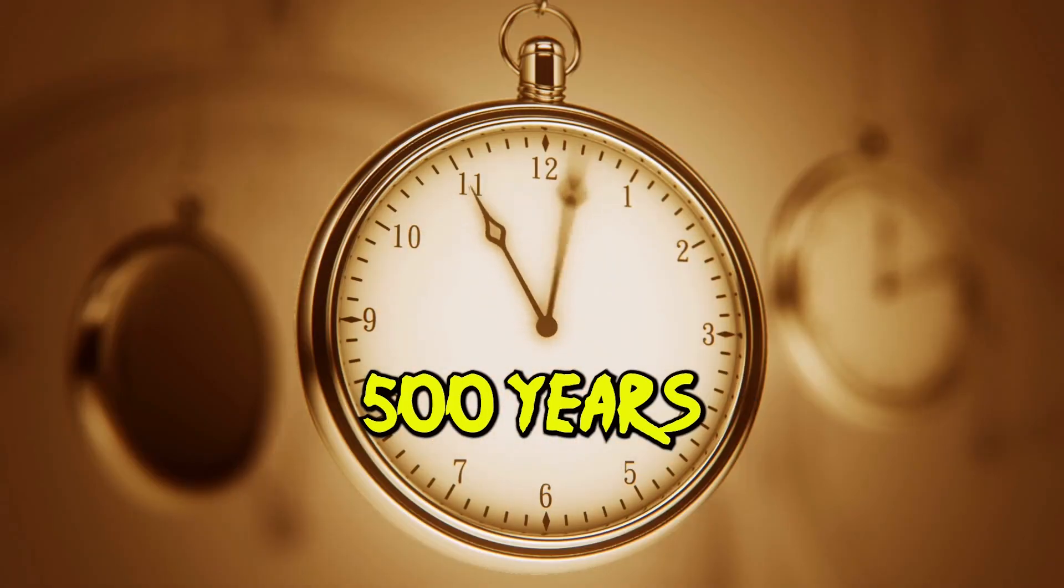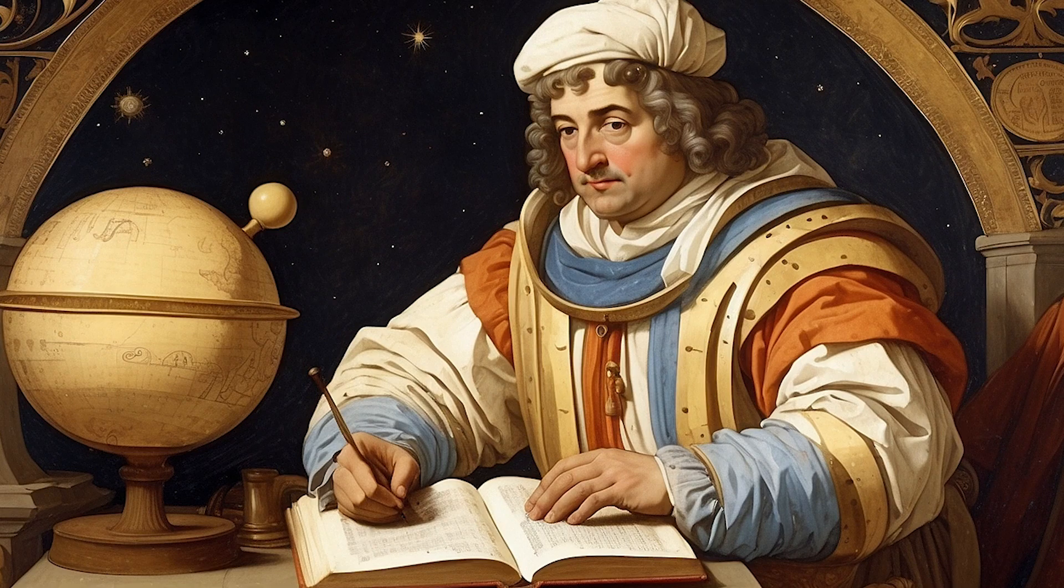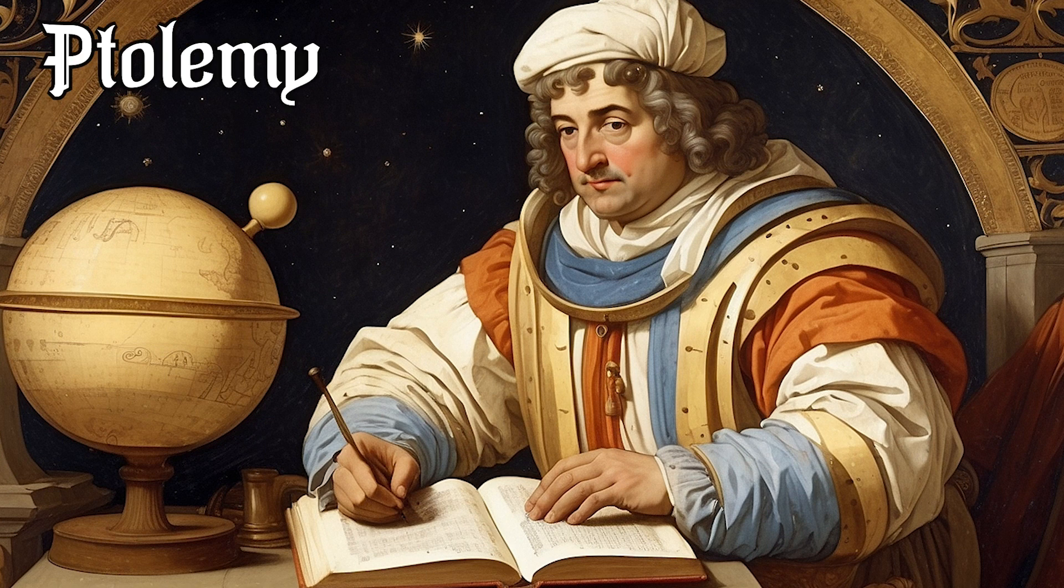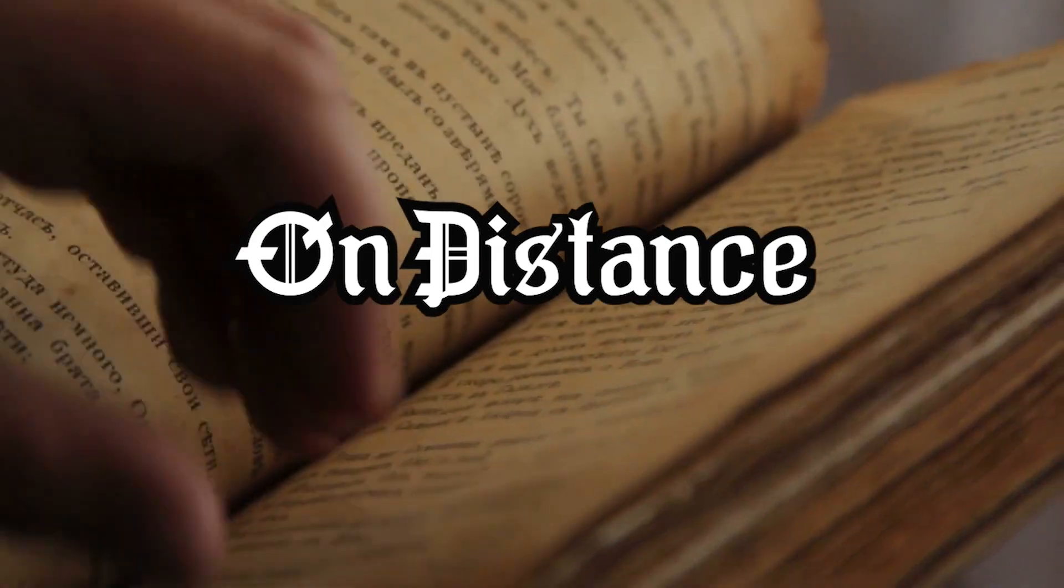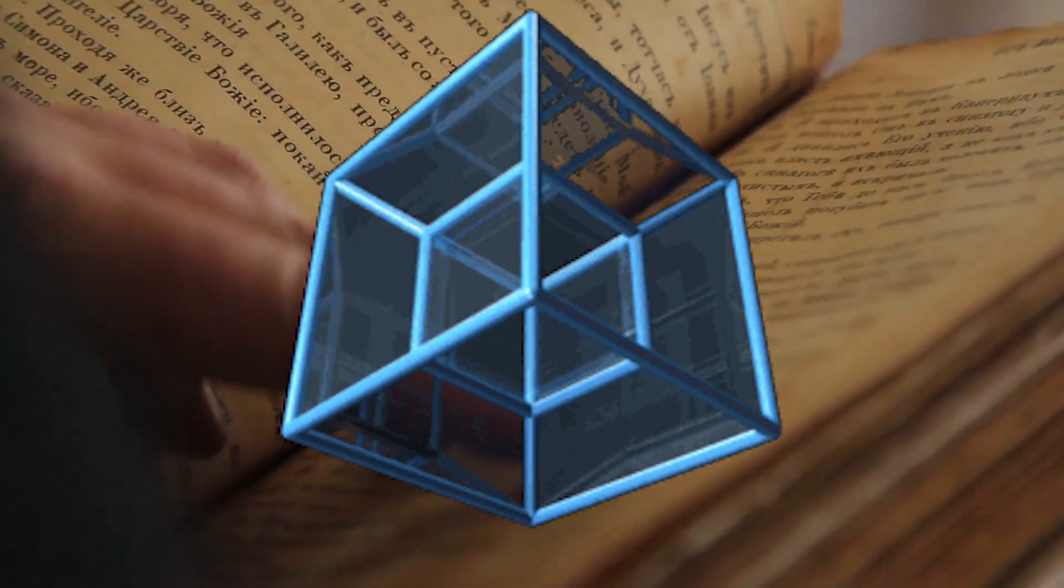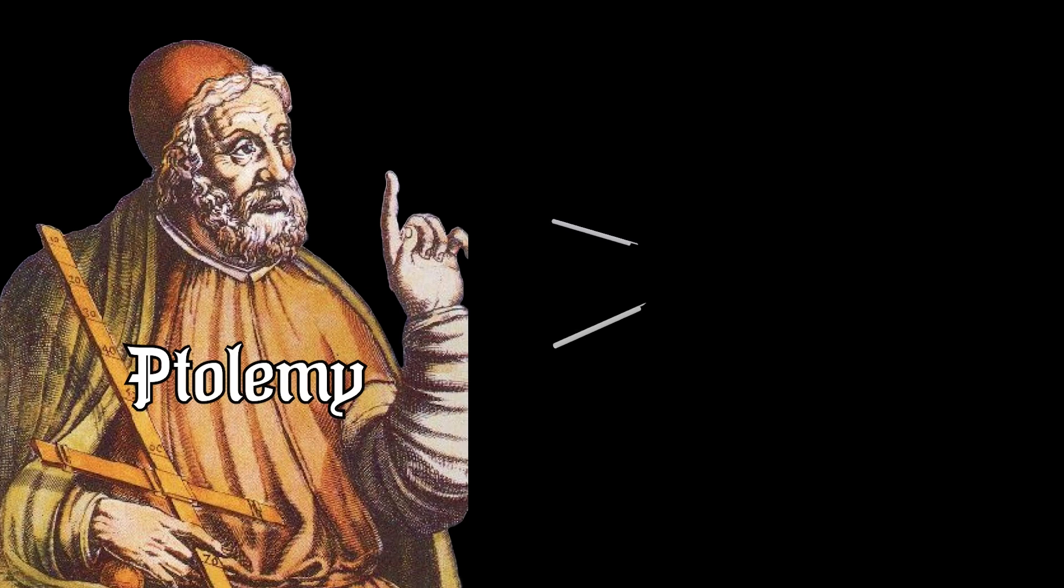Furthermore, 500 years after Aristotle's death, the astronomer Ptolemy from Alexandria went beyond Aristotle and offered, in his book On Distance, the first ingenious proof that the fourth dimension is impossible. First, he said, draw three mutually perpendicular lines.